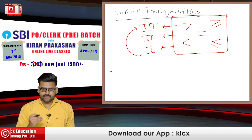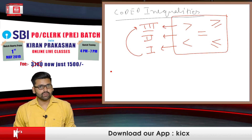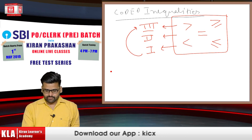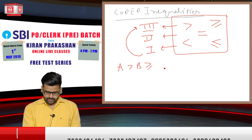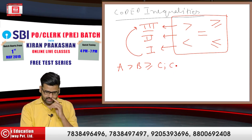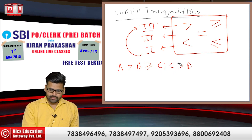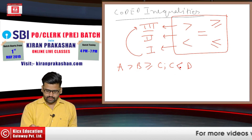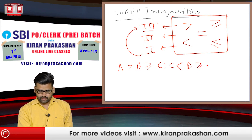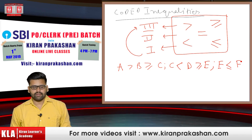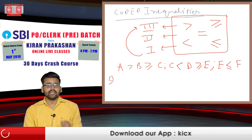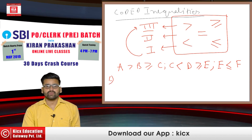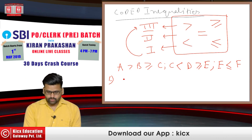Let's talk about a question. The equation given is: A > B ≥ C; then C < D and ≥ E; then E ≤ F. This is the statement given to you, dear students. And after this, you have four conclusions and you need to identify which conclusions follow and which do not. The four conclusions are: (1) A > C, (2) A ≤ D, (3) B > E, (4) E ≥ A.